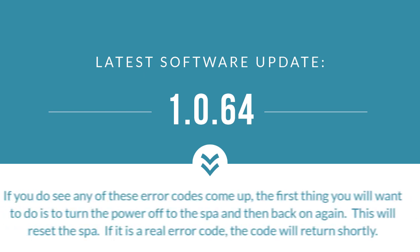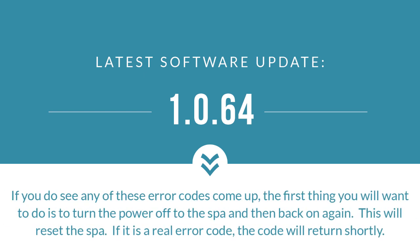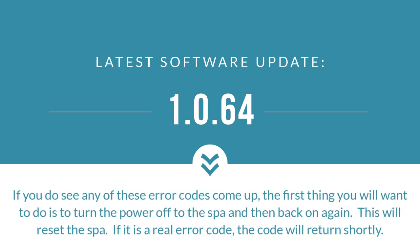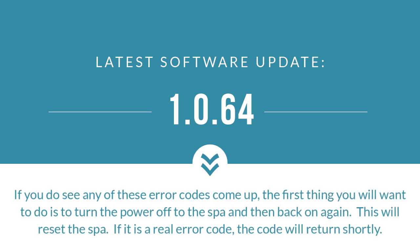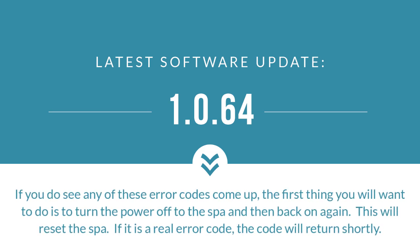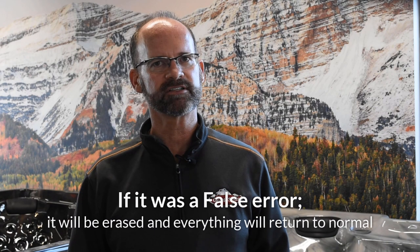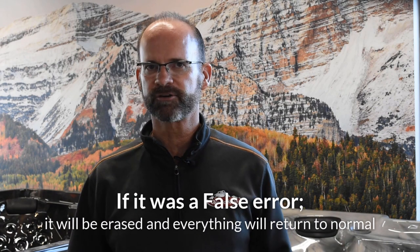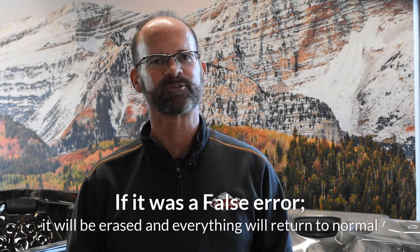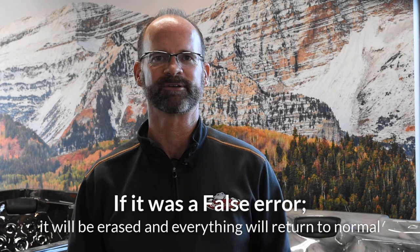If you do see any of these error codes come up, the first thing you'll want to do is turn the power off to the spa and then back on again. This will reset the spa. If it is a real error code, the code will return shortly. If it was just a false error, it will be erased and everything will return back to normal.